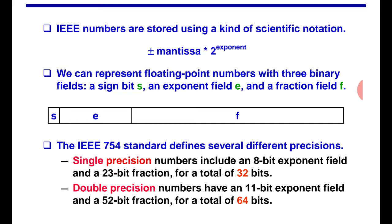We can represent floating point number with 3 binary fields: a sign bit s, an exponent field e, and a fraction field f. There will be three sections. One is sign, one is exponent, one is fractional number. This fractional part is also called mantissa by some authors.